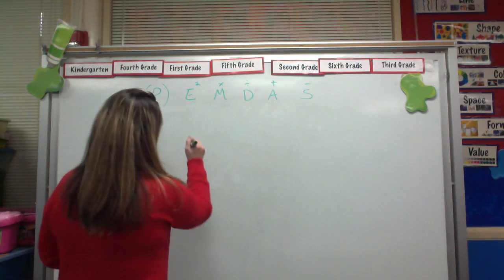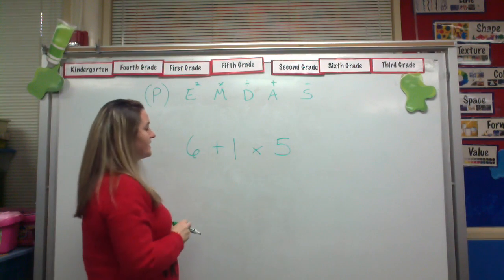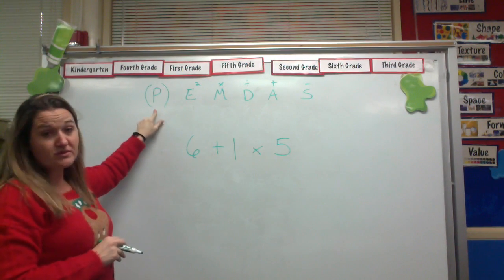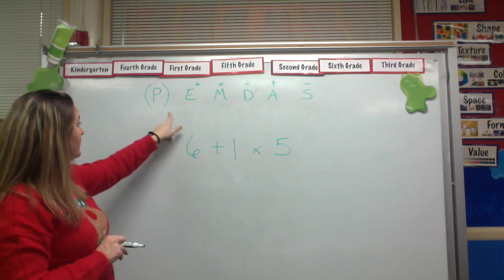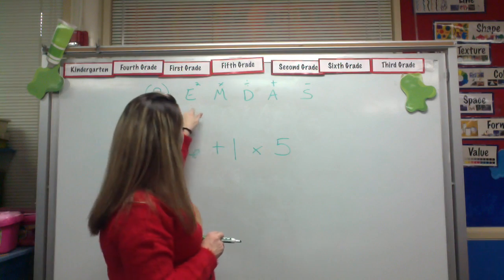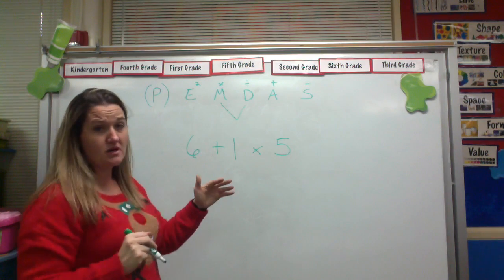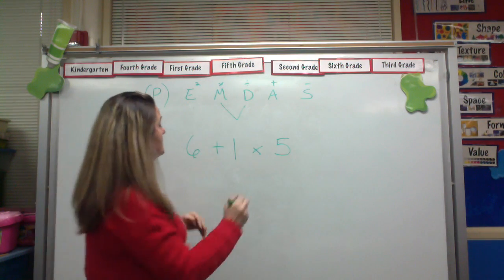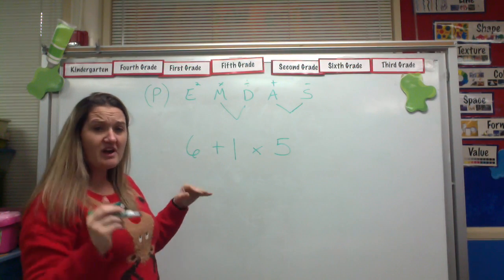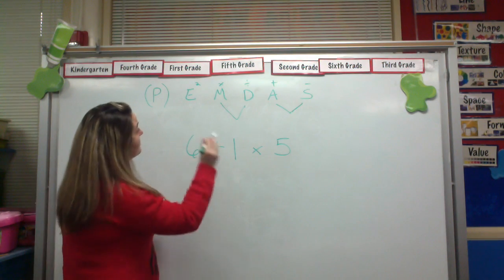So let's just work out a few examples from the book. 6 plus 1 times 5. So again, we start over here. Are there any parentheses? Because if so, we would do them first. No parentheses. Let's move on. Are there any exponents? Nope, no exponents in this one. And then multiplication and division, they are really the same. I mean, multiplication does not necessarily have to come before division. They're actually the same, just like addition and subtraction are the same.